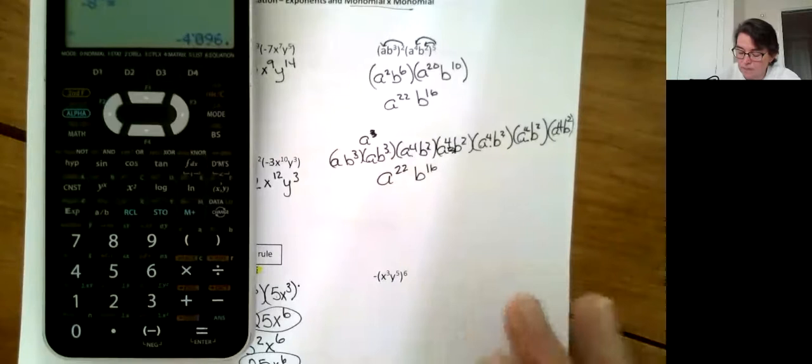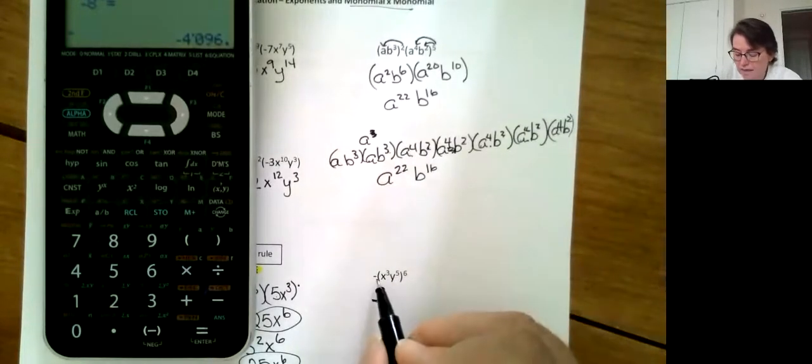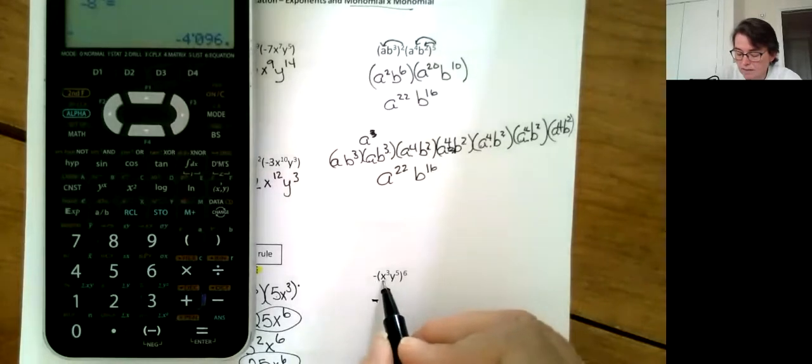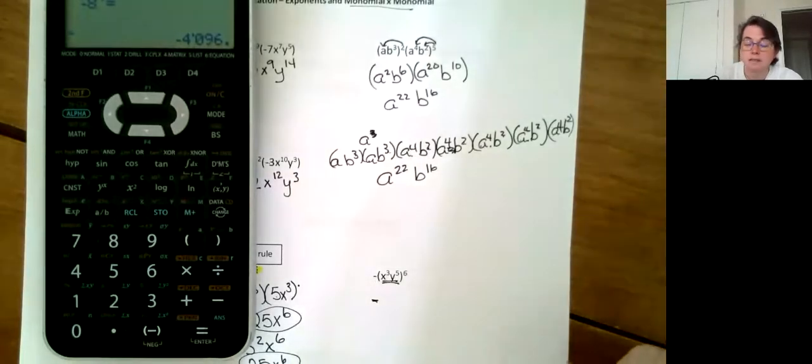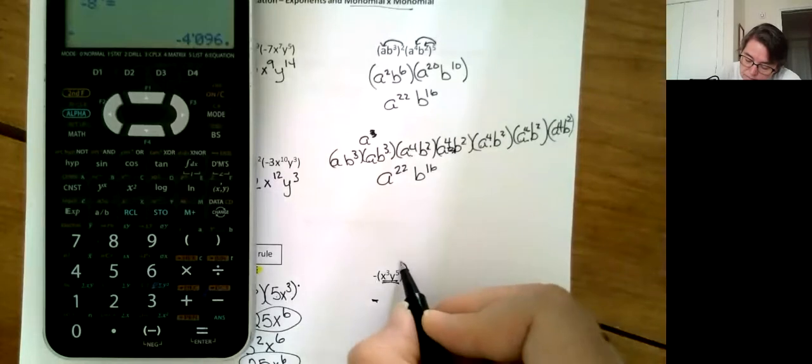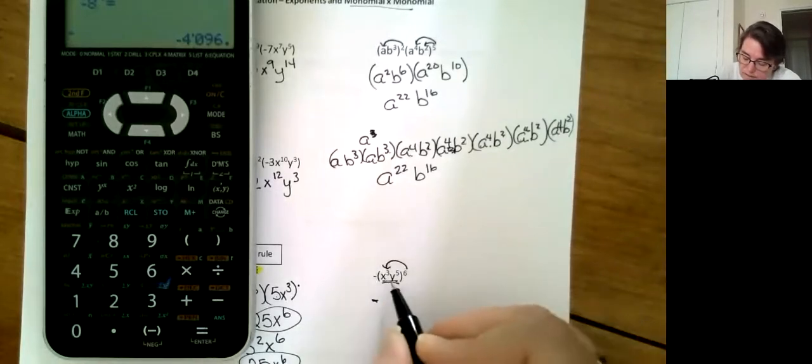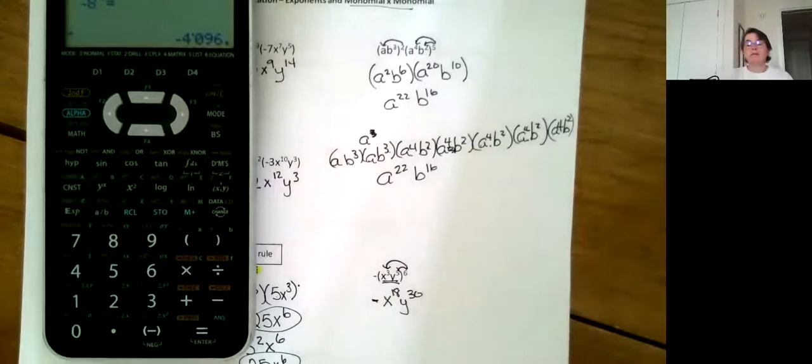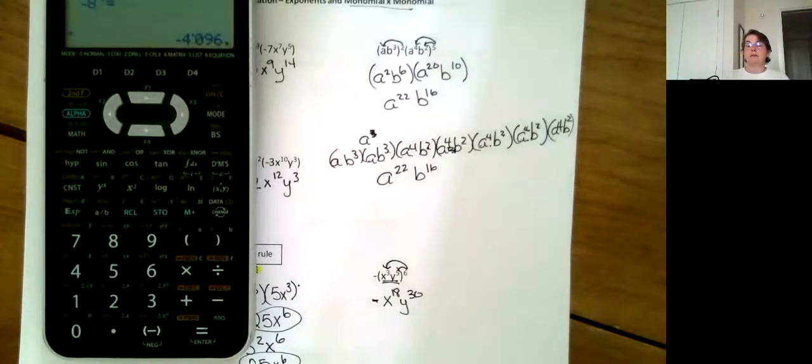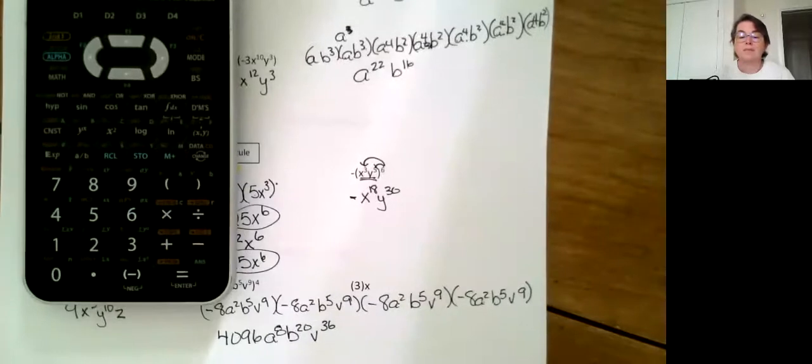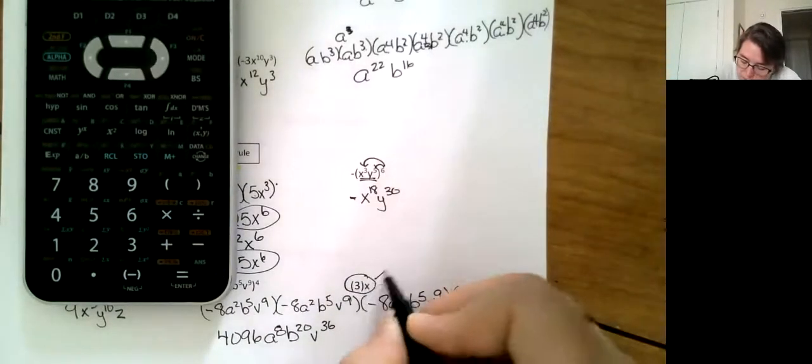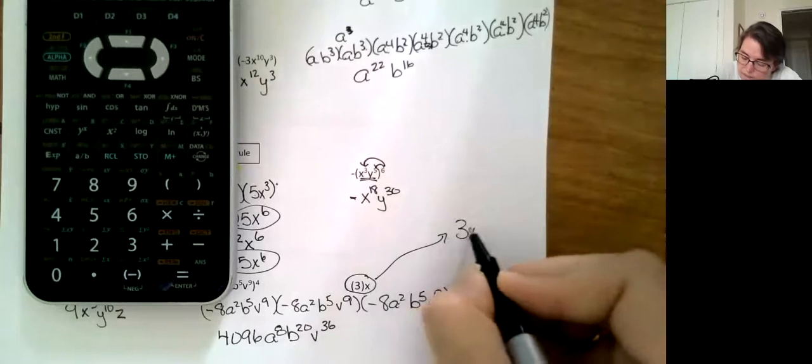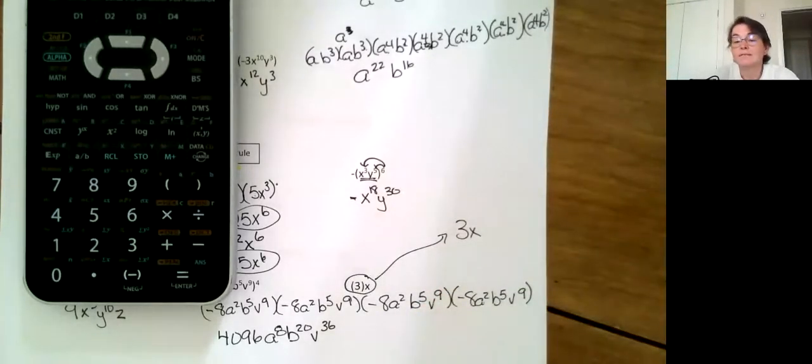Last one here—oh, tricky. That negative out front stays there, and it's only this part that's raised to the sixth power. So I don't feel like writing it out six times, I'm going to go x to the 18 and y to the 30. If you want, you can do it and you'll find out you get the exact same answer. And then I put a silly one at the end—it's just 3x. I was running out of complicated stuff to give you, so I made a simple one.